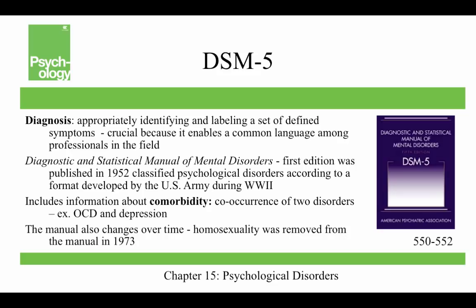The DSM-5 is about diagnosis — appropriately identifying and labeling a set of defined symptoms — and it's crucial because it enables a common language among professionals. The Diagnostic and Statistical Manual of Mental Disorders is now in its fifth edition, published in 2013. The first edition was published in 1952. The DSM-5 includes information about comorbidity — the co-occurrence of two disorders, such as OCD and depression. The manual changes over time; for example, being gay was considered a disorder until 1973, appearing in the first two editions.